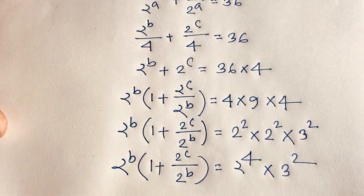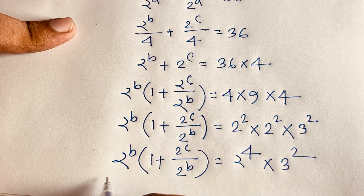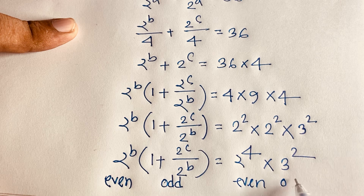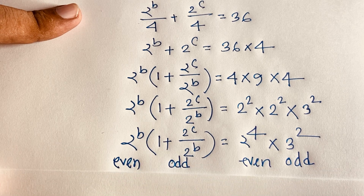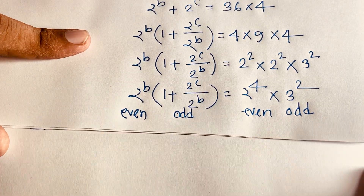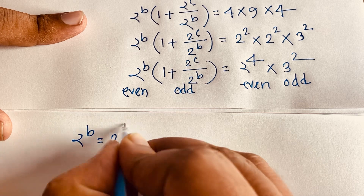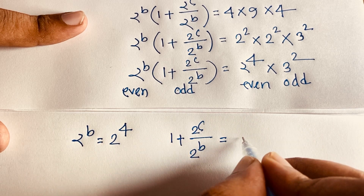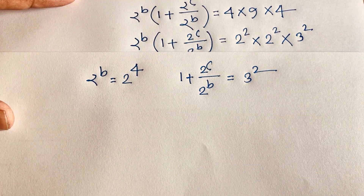Again, this is even, this is odd, this is even, and this is odd. Comparing both equations, I can say 2^b is equal to 2^4. So the exponents are equal, giving b is equal to 4. And separately, 1 plus 2^c over 2^b equals 3^2.